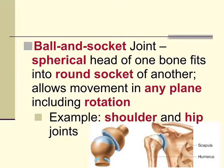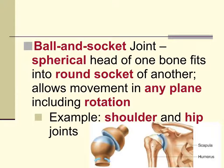The last type is the ball and socket joint. This also describes the shape of the bone ends: one end is a ball or spherical-shaped head that fits into a round, concave socket. When they come together, it allows movement in any plane and any direction, including rotation. Ball and socket joints are found in the shoulder and the hip.